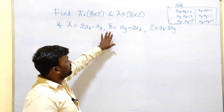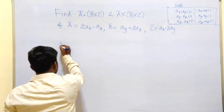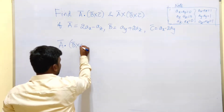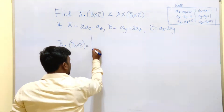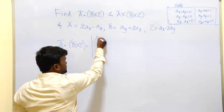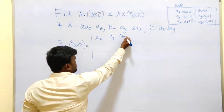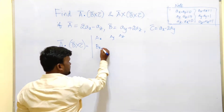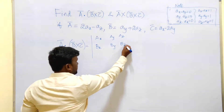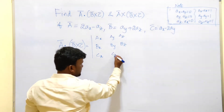If vectors a bar, b bar, c bar are given, the formula for a bar dot (b bar cross c bar) requires writing a determinant. The first row contains the components of a: ax, ay, az. The second row contains components of b: bx, by, bz. The third row contains components of c: cx, cy, cz.